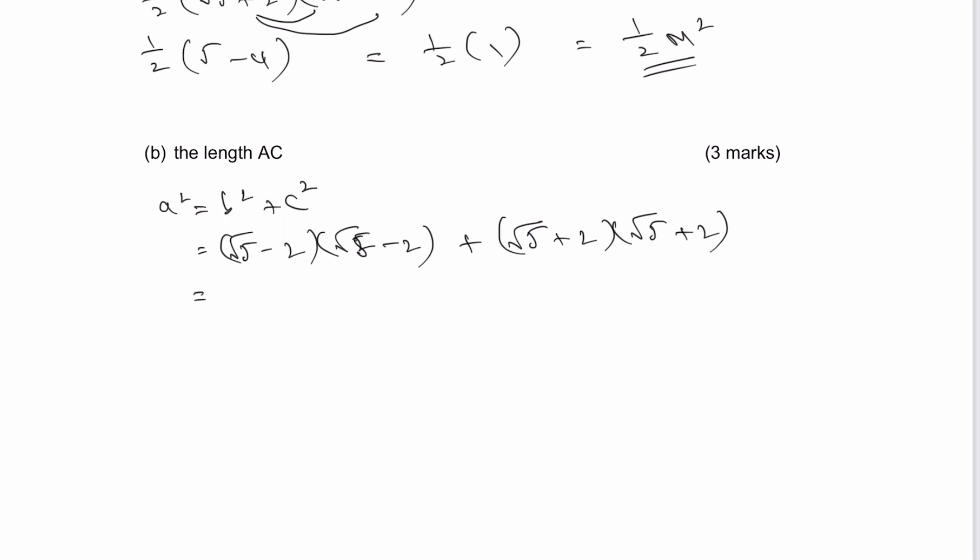So what do I get? Well, I've got root 5 times root 5 as we did before, which is going to get square root of 25, which is 5. Now, this time I've got root 5 times minus 2 is minus 2 root 5. Then I've also got another minus 2 root 5, so I end up with minus 4 root 5. And then I've got minus 2 times minus 2 is positive 4.